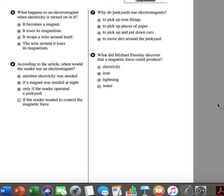Number 8. What did Michael Faraday discover that a magnetic force could produce? F. Electricity. G. Iron. H. Lightning. I. Water.